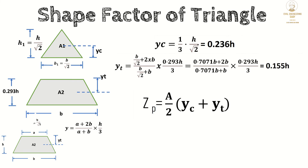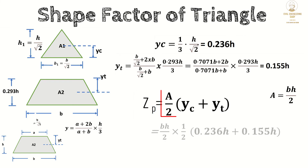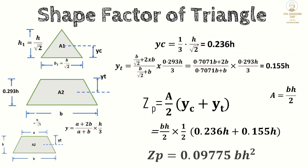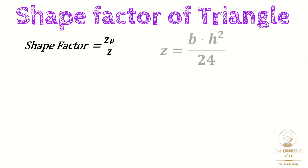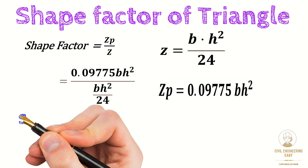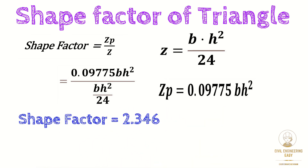Now we calculate the plastic modulus. Using Zp = (A/2)(yc + yt), where the triangle area A = bh/2, yc = 0.236h, and yt = 0.155h, after simplification we get Zp = 0.0975 × bh². Finally, the shape factor equals Zp / Ze = 0.0975bh² / (bh²/24) = 2.346. So the shape factor of a triangular section is 2.346. See you in the next video.